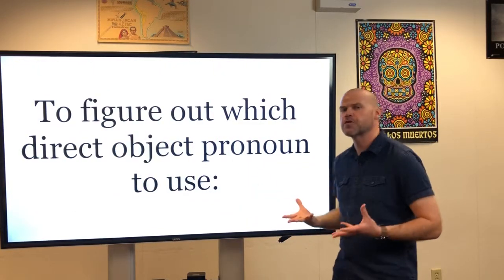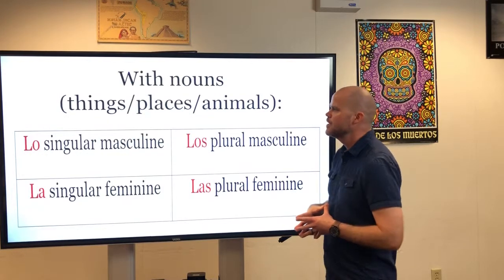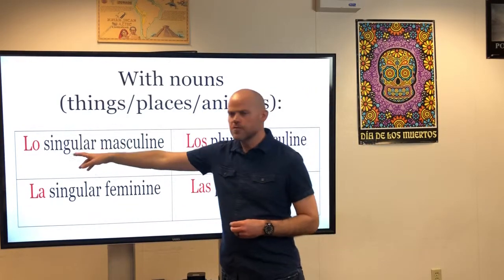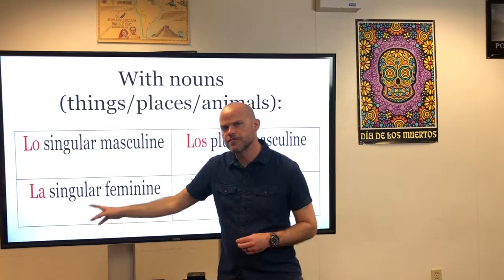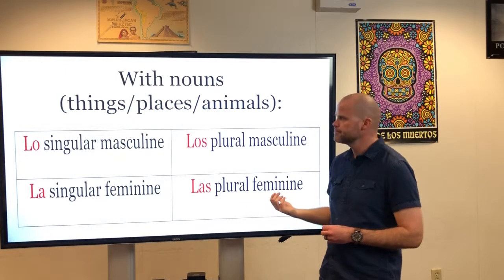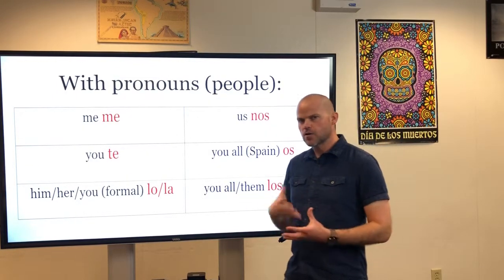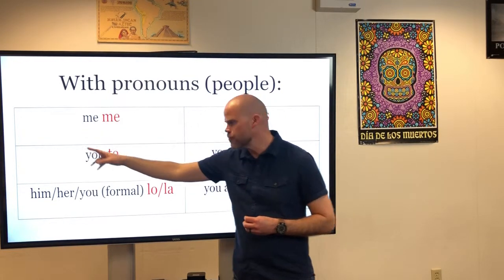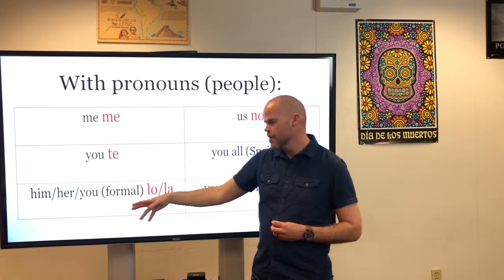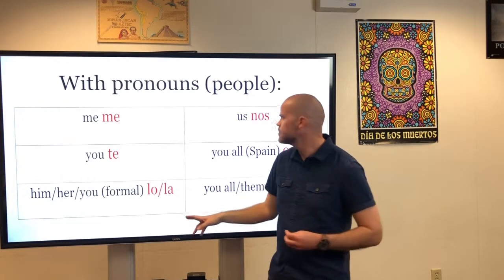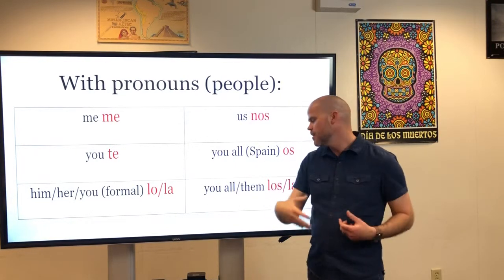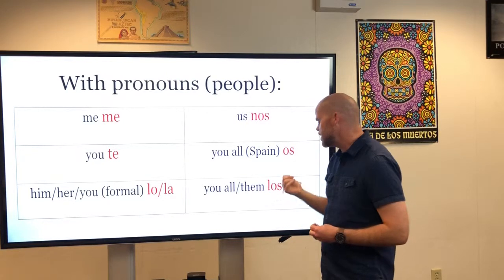To figure out which direct object pronoun to use — sometimes the hardest part — when talking about nouns (things, places, animals), use lo for singular masculine, la for singular feminine, los for plural masculine, and las for plural feminine. With people or pronouns, use me for me, te for you, lo or la for him/her/you formal depending on gender, nos for us, os for you all in Spain (vosotros), and los or las for you all (ustedes) or them.